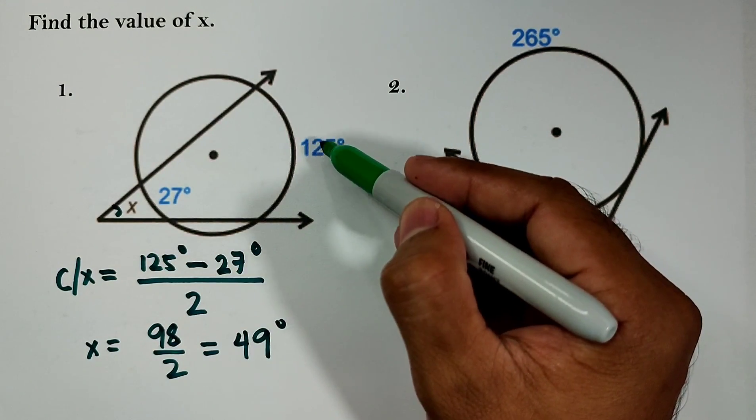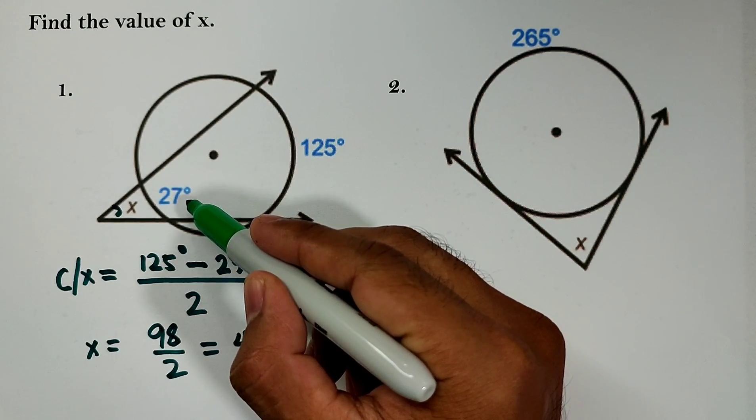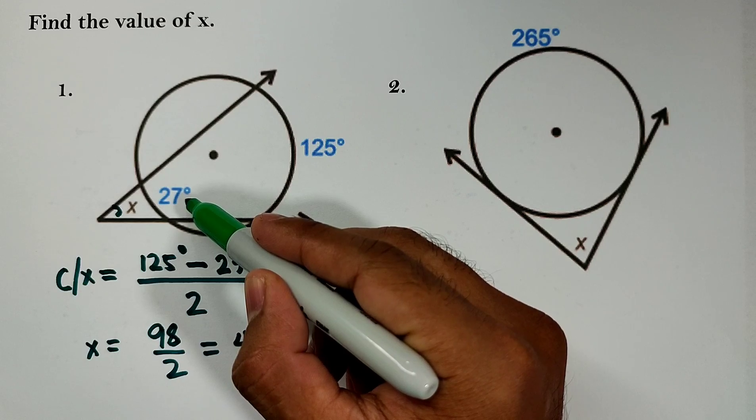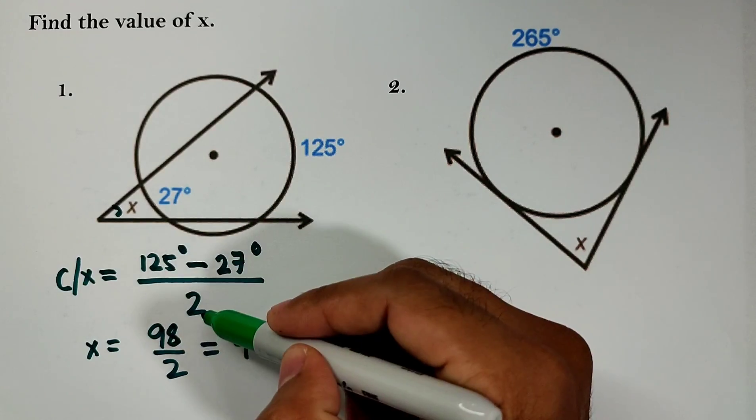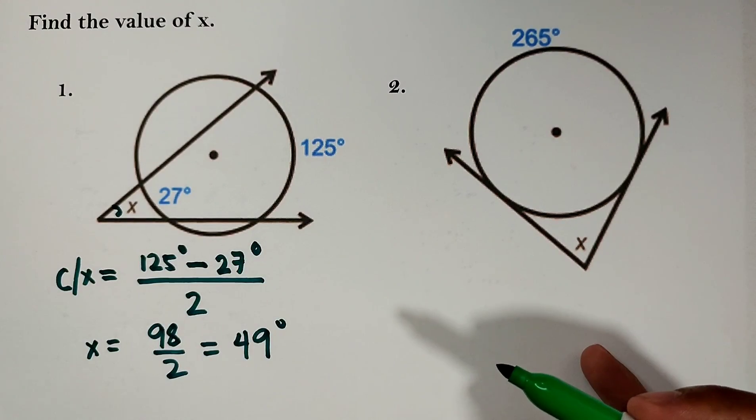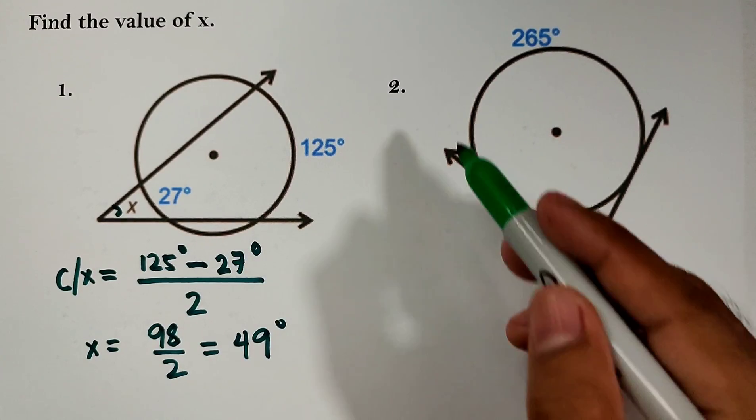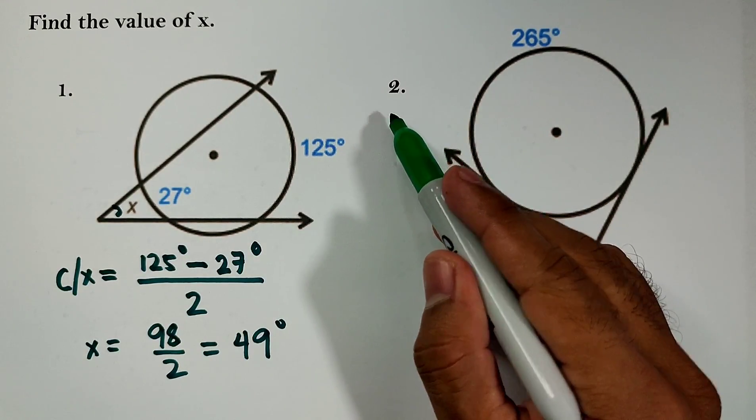Again, 125 minus 27, divided by 2, gives us 49 degrees. Now let's look at example number 2.